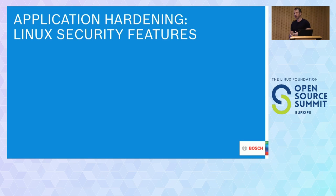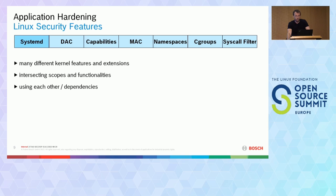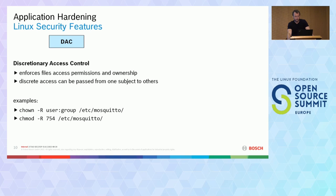What are our measures for application hardening? I want to give a brief overview of the different Linux security features that exist. Here in the top bar you can see the different features, which have intersecting scopes and are partially dependent on each other. This landscape of Linux security features is not that easy or clear. We have discretionary access control — pretty basic, everybody knows this is ownership and permissions — but it's not always easy to deploy.